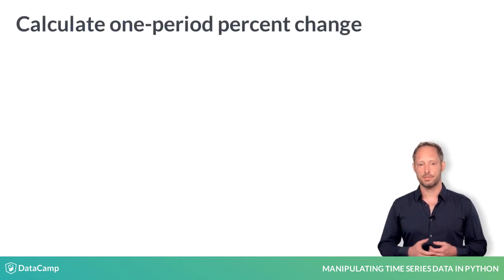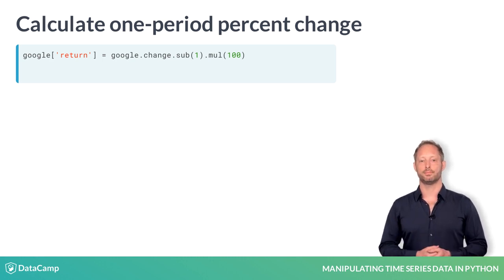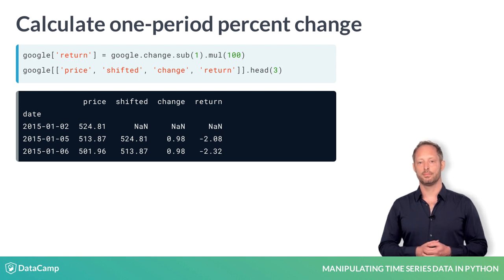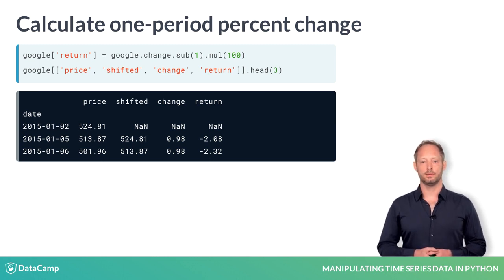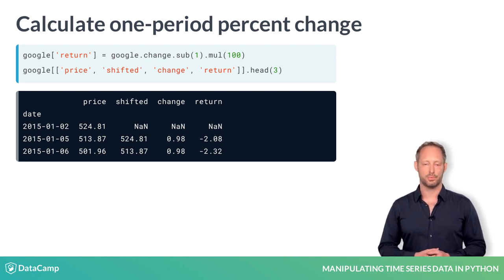As you have seen before, you can chain all data frame methods that return a data frame. The returned data frame will be used as input for the next calculation. Here we are subtracting 1 and multiplying the result by 100 to obtain the relative change in percentage terms.